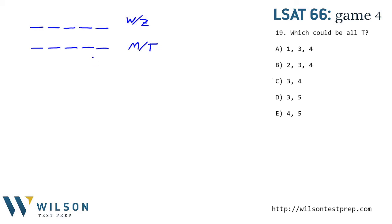LSAT 66, Game 4. We have an ordering problem. We have a recital where five solos are going to be played. In each solo, there's two things we need to know: is it performed by Wayne or Zara, and is it modern or traditional? We've got two sequences here. Let's look at the conditions we were given. We're told the third solo is traditional, so we've got a T there.